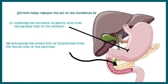Secretin has two major functions in regulating the pH of the duodenum. First, it inhibits gastric secretion, thereby preventing further acidification of the chyme. Second, it stimulates the production of bicarbonate from the pancreas. By these two methods, it regulates the alkaline environment in the duodenum.